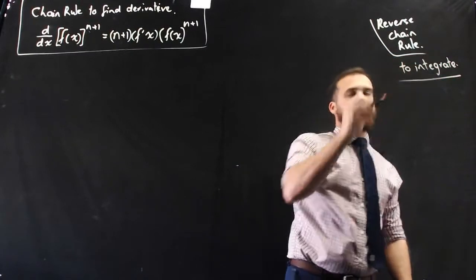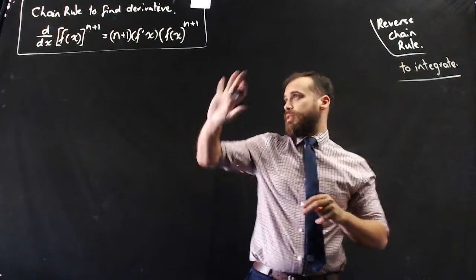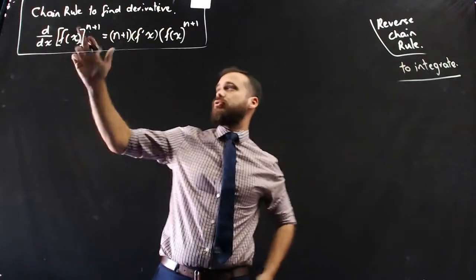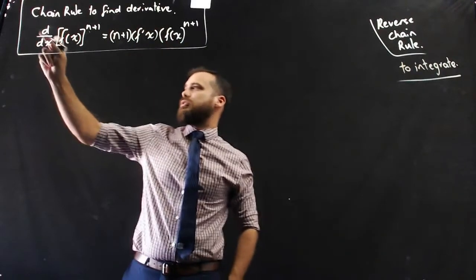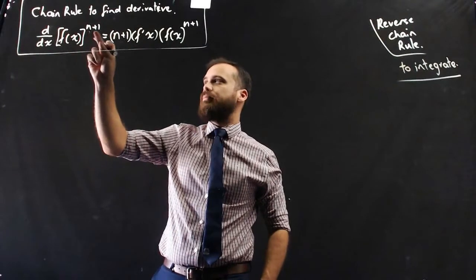You have used chain rules before, but it's always been to find the derivative. So, this jargon up here, the chain rule to find the derivative says that the derivative of a function to the power of n plus 1 equals